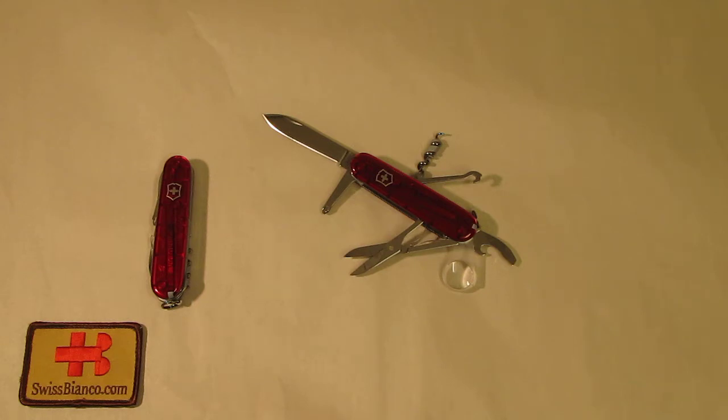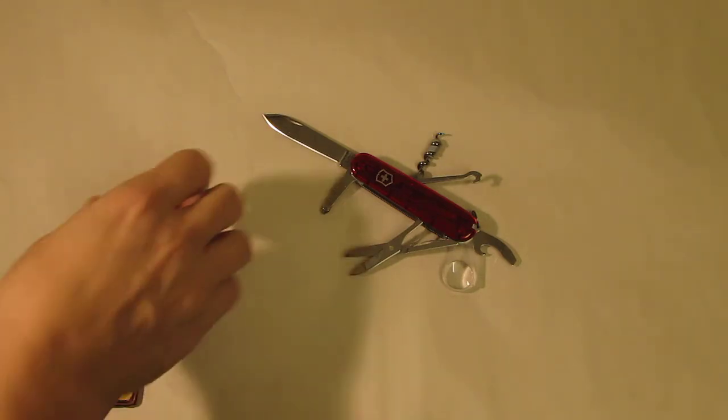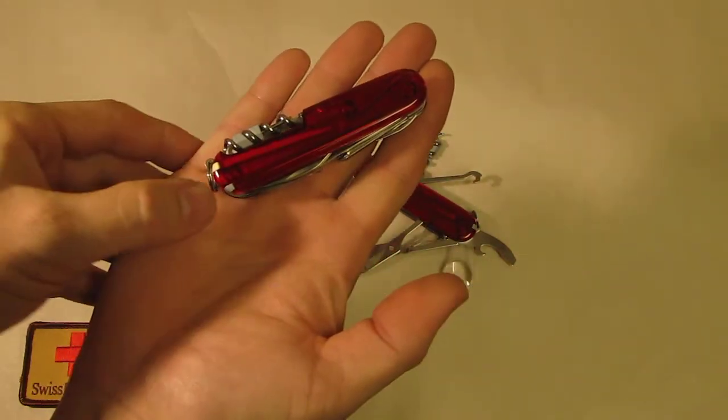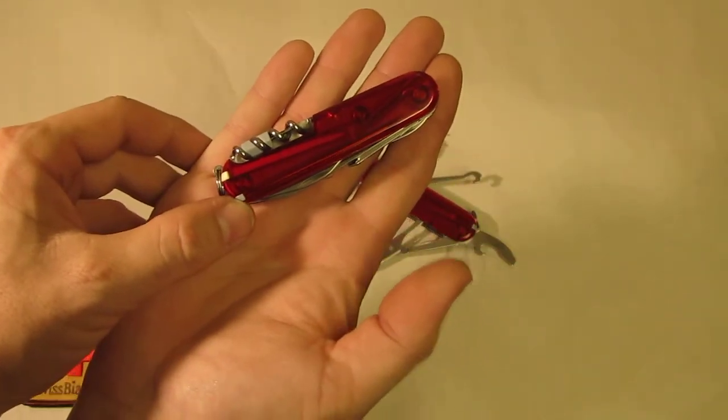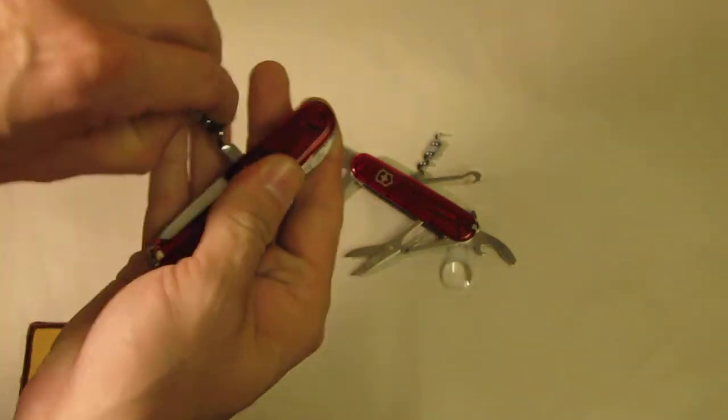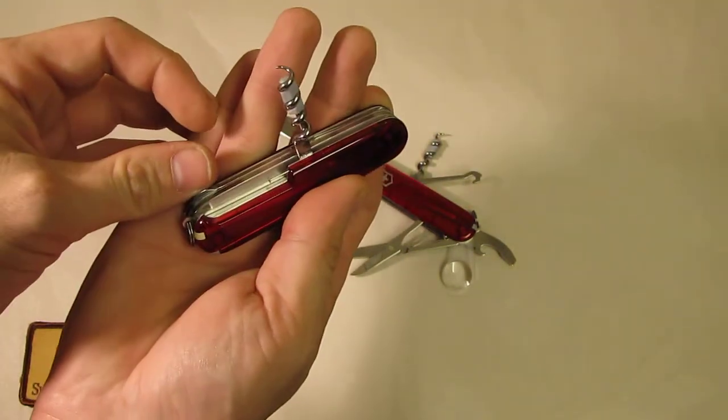Over the years we had it in different colors of the scales: in red, solid red, in yellow, in blue translucent, and now we have it in ruby red translucent. Most of the scales were plus scales, that means on the back side of the Swiss Army knife we have the pen, and on top of the scales is the pin.